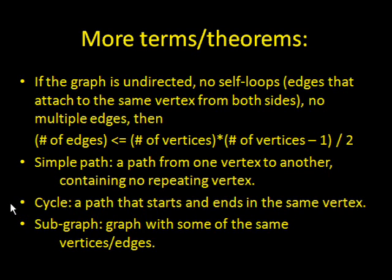Here are some more terms. If a graph is undirected and there are no self-loops within it, which means that the edges that attach to the same, there are no edges that attach to the same vertex from both sides, and there are no multiple edges, then the number of edges is always less than or equal to the number of vertices times the number of vertices subtract 1 divided by 2.